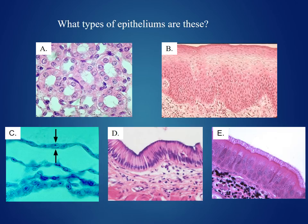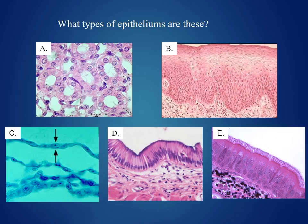Looking at image C, focusing on the layer indicated by the arrows: how many layers? This is a single layer. What is the cell type? It's a squamous cell. So this is simple squamous epithelium. Looking at image D: how many layers? It appears to be one layer — simple. What do the cells look like? They look like columns — columnar. So this is simple columnar epithelial tissue.